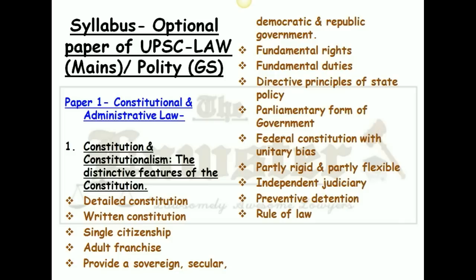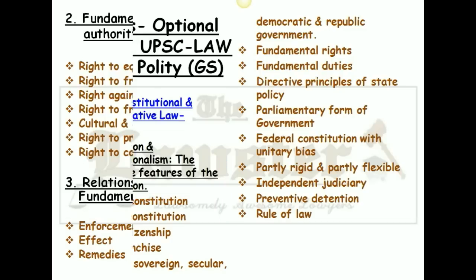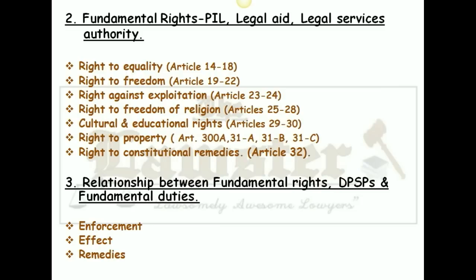Paper 1, that is constitutional and administrative law, consists of various chapters. The first chapter is Constitution and Constitutionalism — I have mentioned various features of this particular chapter. While you study this chapter, you will be covering the doctrine of basic structure, so you will not have to study these features all over again. Make sure you are studying the doctrine of basic structure well, as questions are also asked on it.